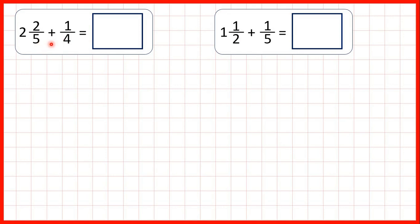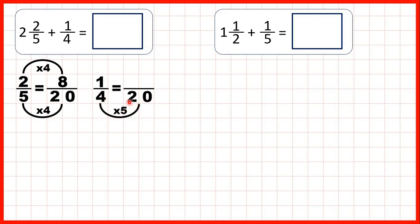Now the lowest common multiple of 5 and 4 is 20, so we can find equivalent fractions to 2 fifths and 1 quarter which have a denominator of 20. 5 times 4 is 20, 2 times 4 is 8, 4 times 5 is 20, and 1 times 5 is 5.